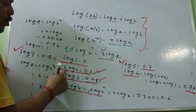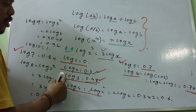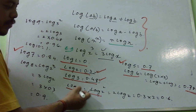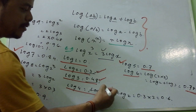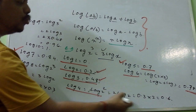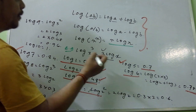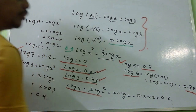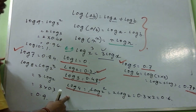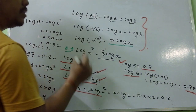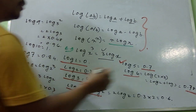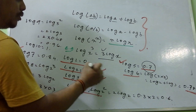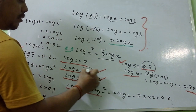Key log values to memorize: log 1 equals zero, log 2 equals 0.3, log 3 equals 0.48. Log 4 means log 2 squared, which is 2 log 2 — two into 0.3 equals 0.6. Log 5 equals 0.78. Remember only these values.